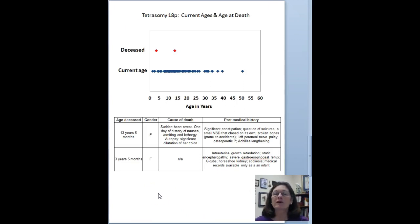This is the information we have on the current ages and the age of death of individuals with Tetrasomy 18P. So the current ages, as when this was done in the summer of 2017, each blue diamond shows the current age of our study participants. You can see that for the most part, they're below 30 years old. So they are a younger group. Two individuals have died, and here are the ages that they died. And here's what we know that may have contributed to their death.